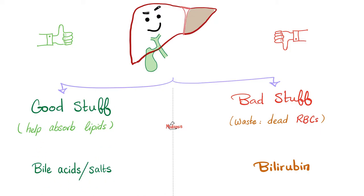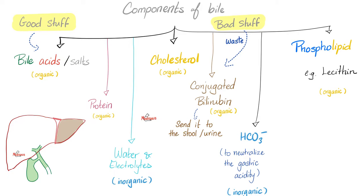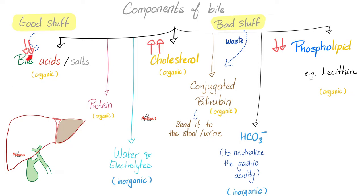Today we focus on the good stuff — bile acids and bile salts. The bile is way more than two things. It has bile acids, bile salts, proteins, water and electrolytes, cholesterol, conjugated bilirubin, bicarbonate to neutralize gastric acidity, and the very important lecithin, which is a phospholipid. If you have too much cholesterol production but not enough lecithin and not enough bile acids and bile salts, this combination increases your risk of developing cholesterol — yellow — gallstones.